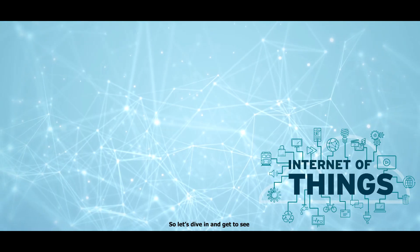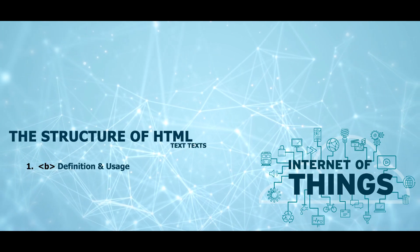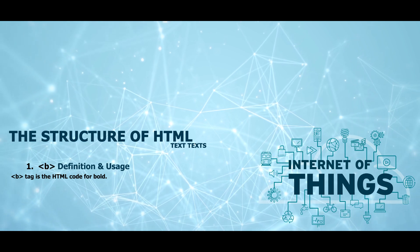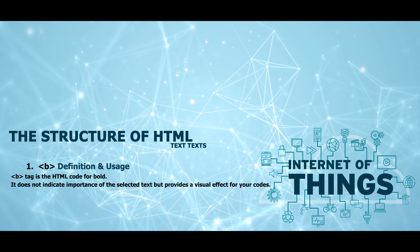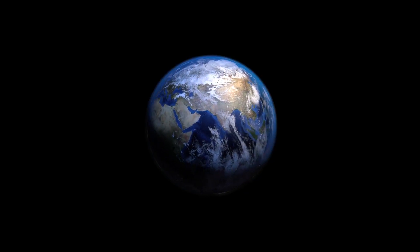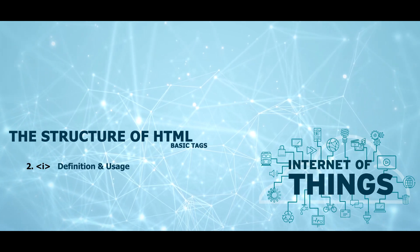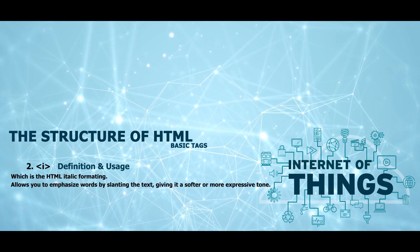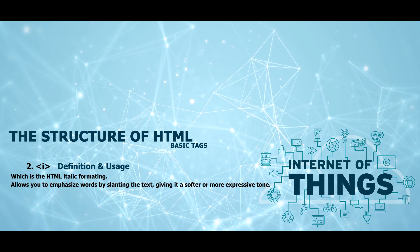Let's get to see the structure of HTML text. First, we have the b tag — the HTML code for bold. It does not indicate importance of selected text, but provides a visual effect for your code. The i tag, which is the HTML italic formatting, allows you to emphasize words by slanting the text, giving it a softer or more expressive tone.